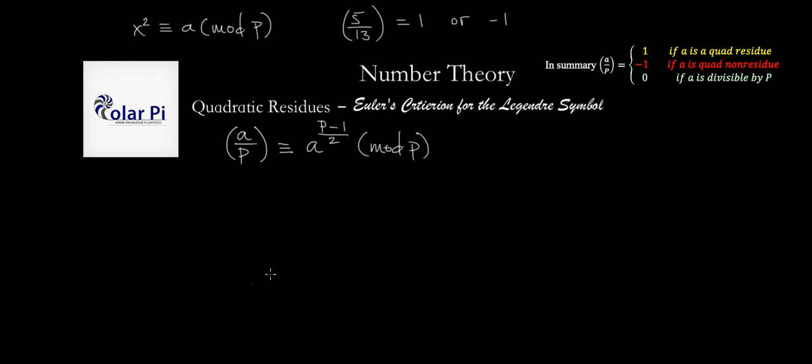If we wanted to know this, we'd have to go back to the definition. Take the numbers from 1 all the way to 12, and we'd have to square each of them, then reduce mod 13 and see if any of them, when reduced mod 13, equals 5.